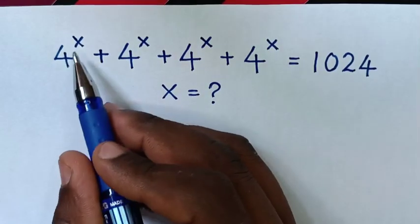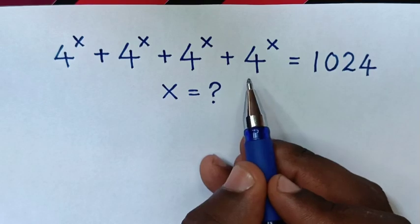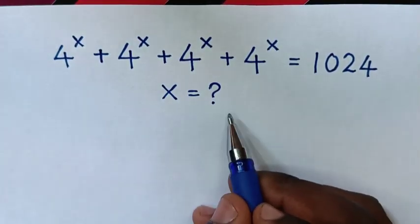Hello! How to solve 4 power x plus 4 power x plus 4 power x plus 4 power x is equal to 1024 to find the value of x.